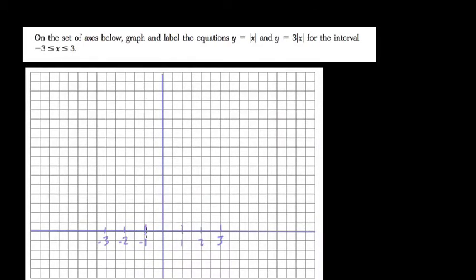Okay, so on the axes below we're graphing two functions: y equals the absolute value of x and y equals 3 times the absolute value of x. We're looking at the interval where x is greater than or equal to negative 3 but less than or equal to 3. We can set up tables here for each function.